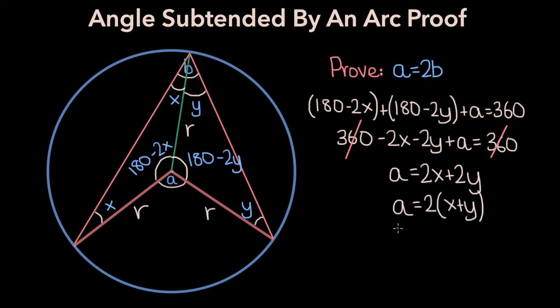And from our figure, we can see that angle B is composed of angles X and Y, so B is equal to X plus Y. And so if we substitute B in for X plus Y in our formula for A, we get that A is equal to 2B. And that's all there is to this proof.